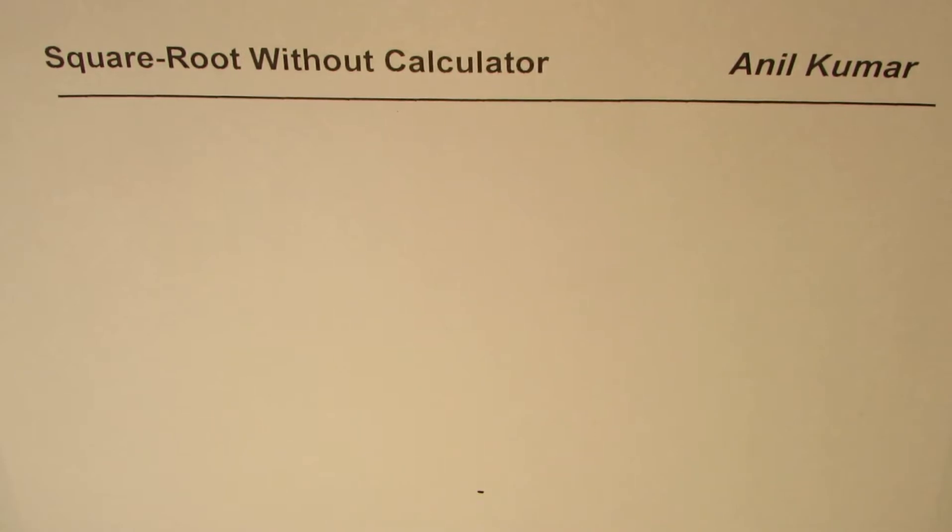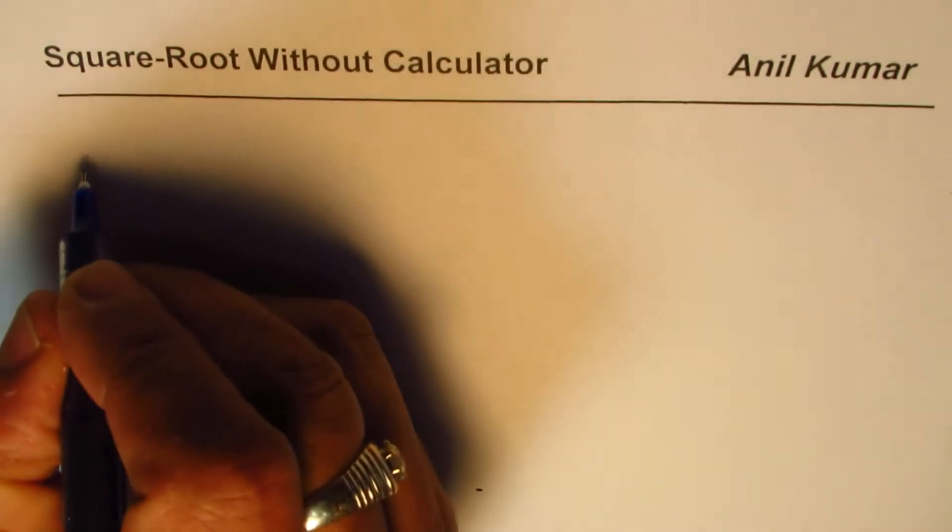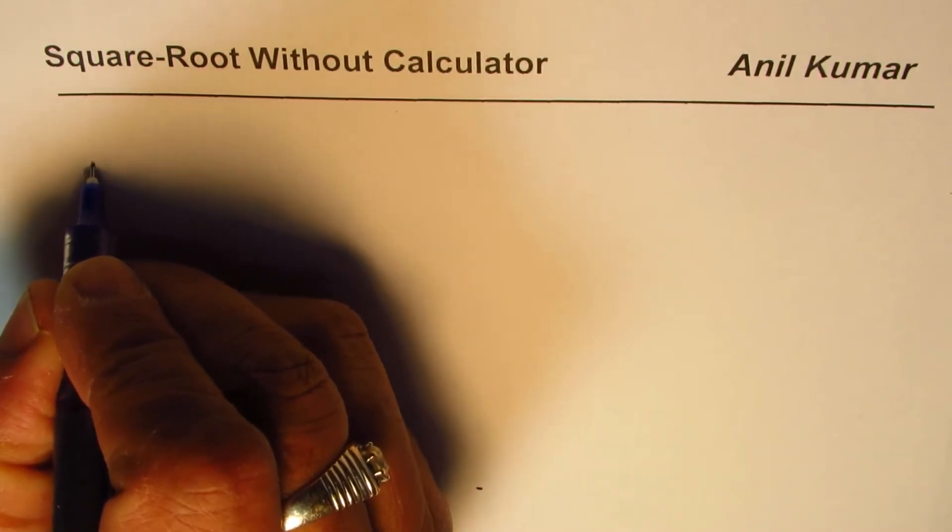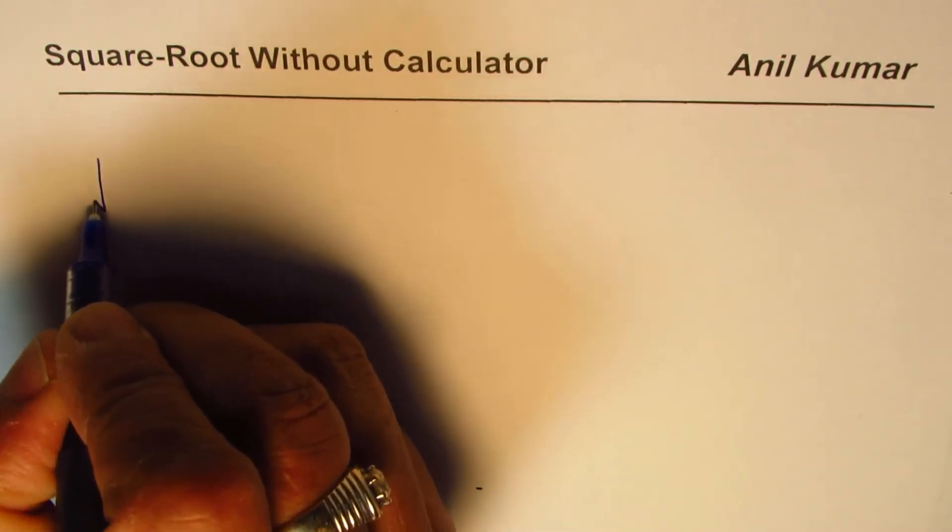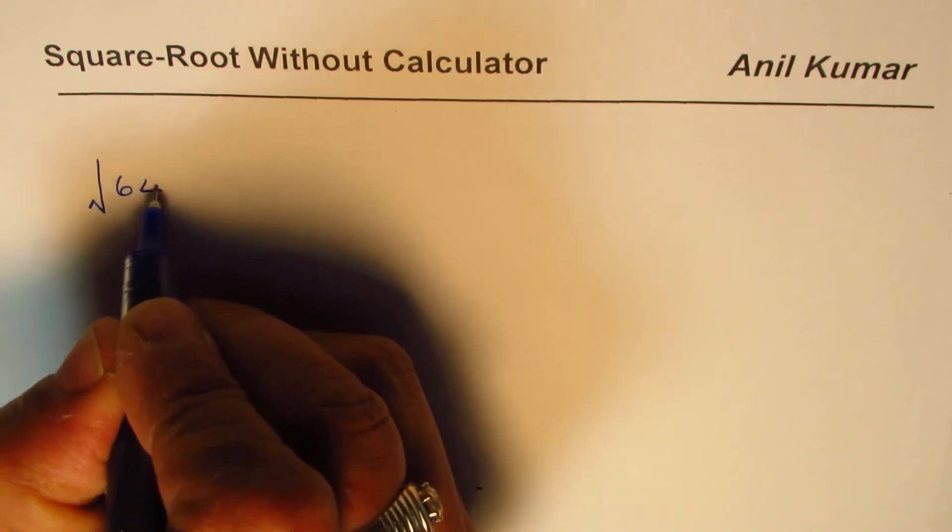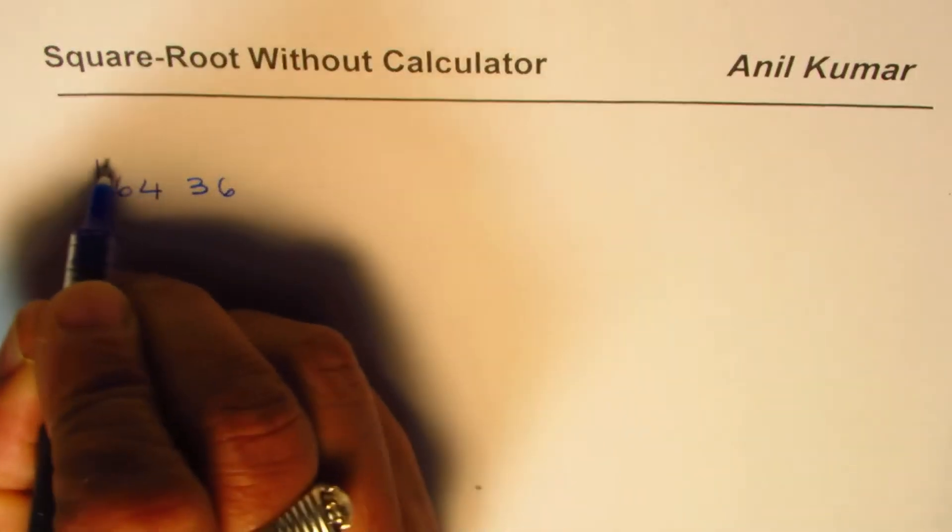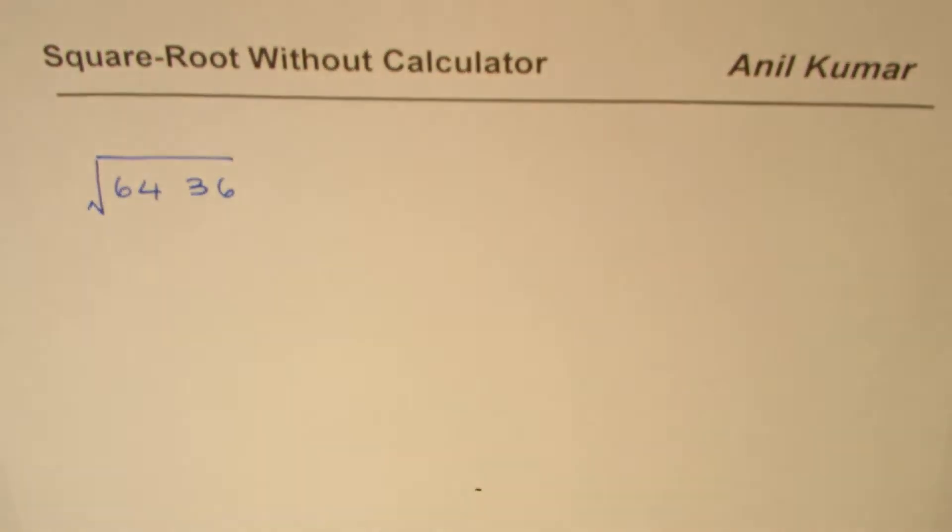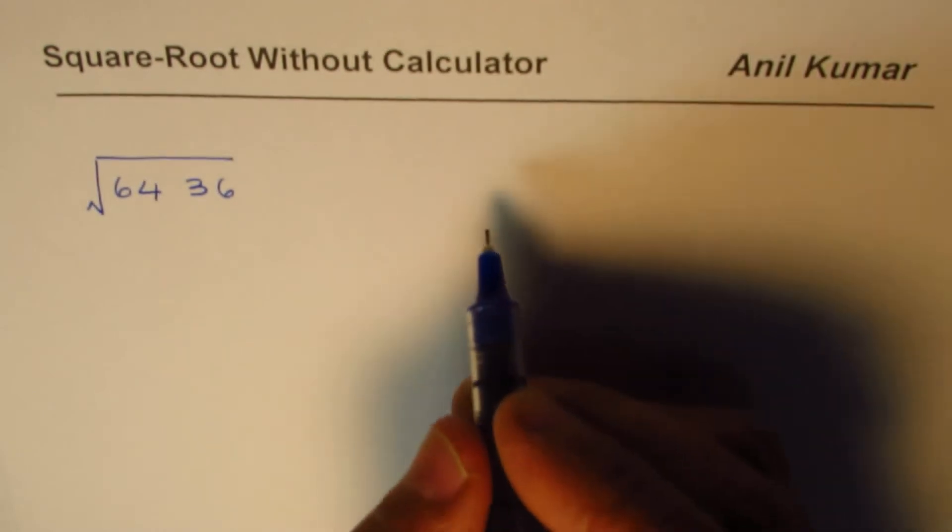Let me take up two questions which are very interesting. One is to find the square root of a number which looks like a perfect square, for example 6436.